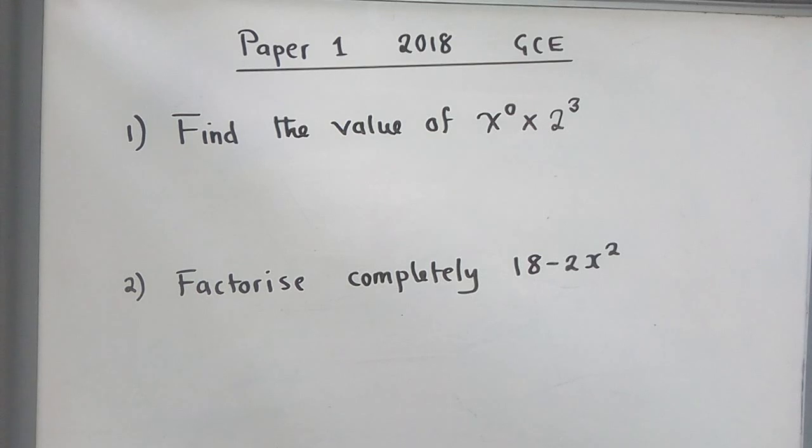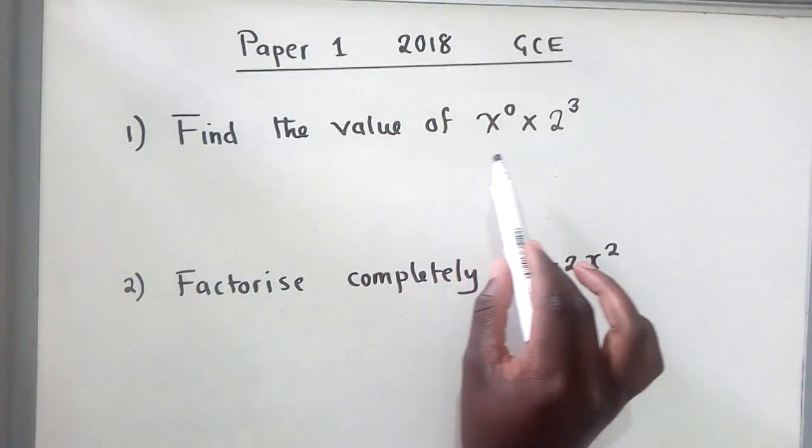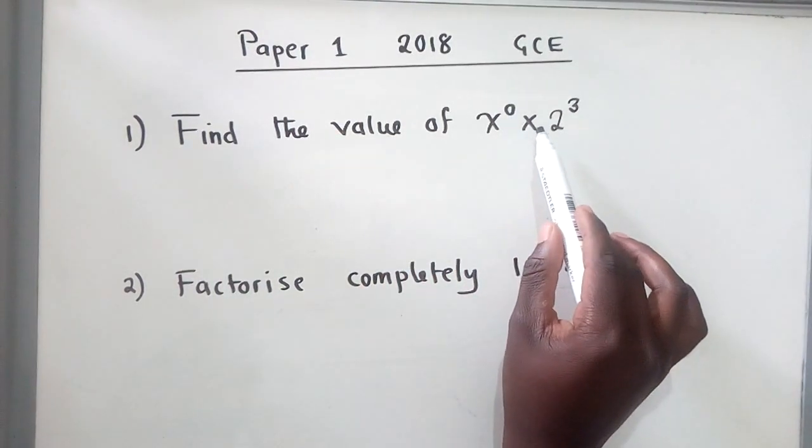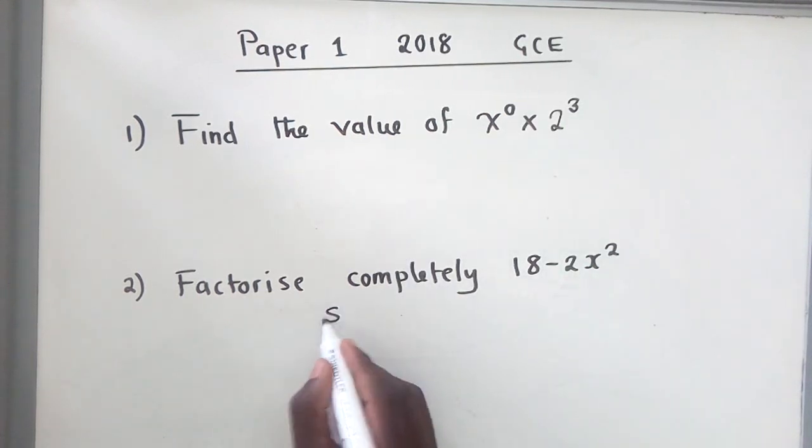Question one says: Find the value of x^0 × 2^3. Let's write the solution here.